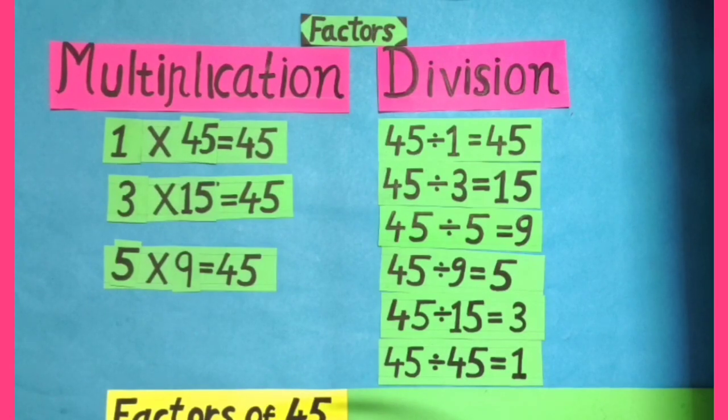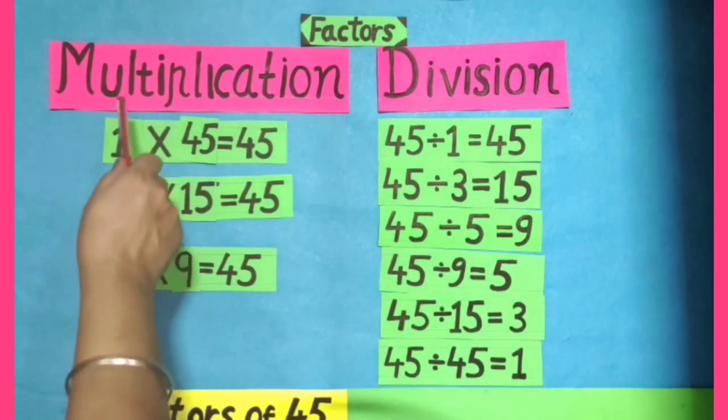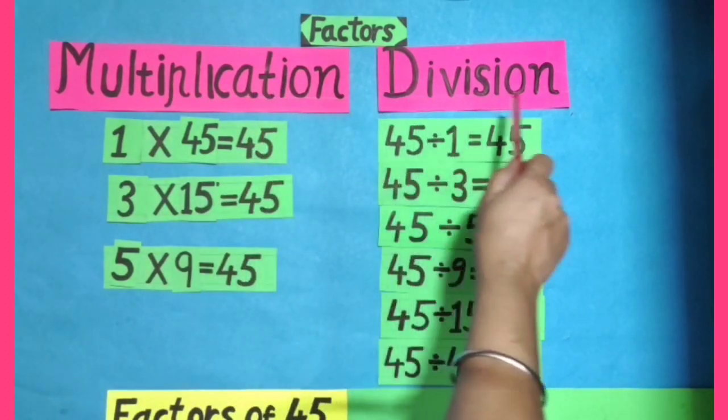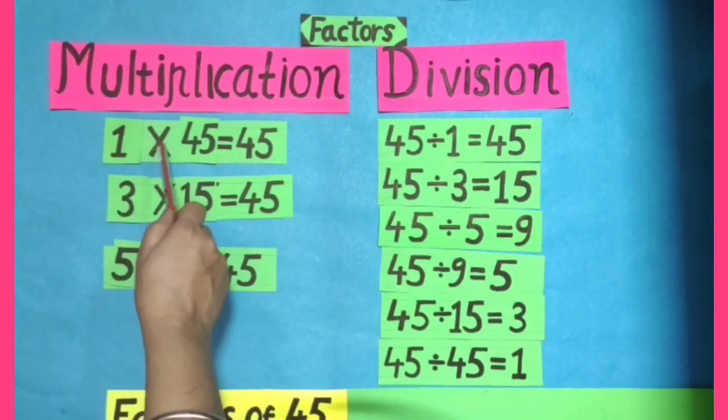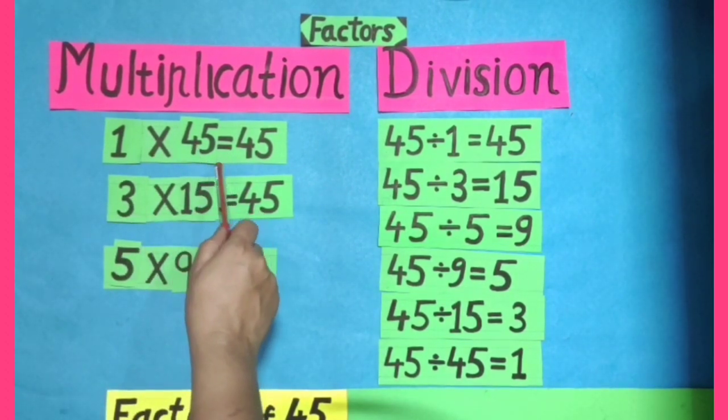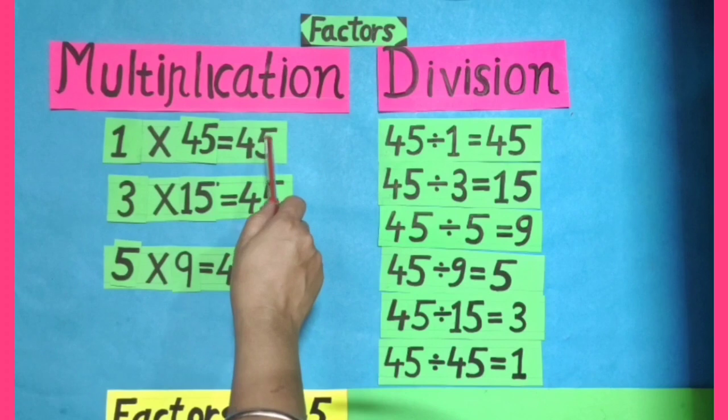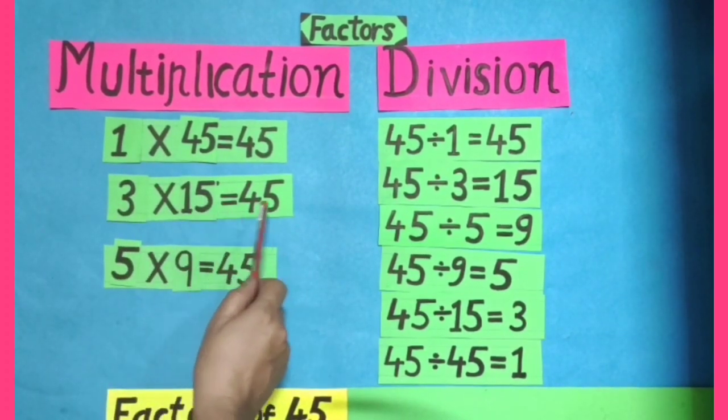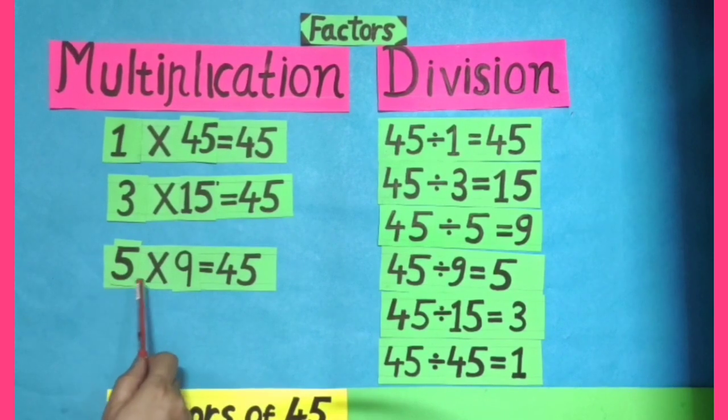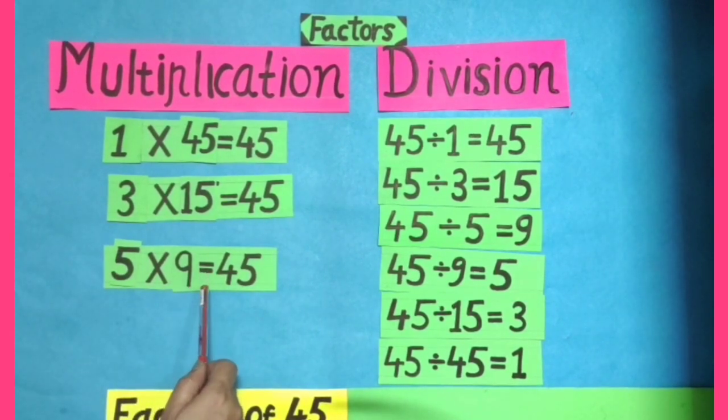There are two methods of doing factors: multiplication method and division method. In multiplication method, 1 multiplied by 45 equals 45. When we multiply 3 by 15, we get 45. 5 multiplied by 9 equals 45.